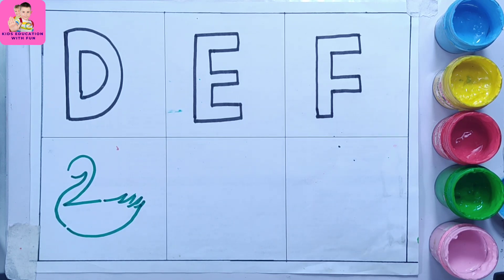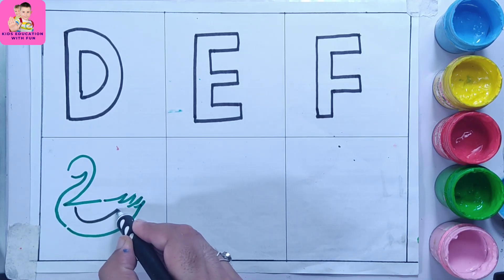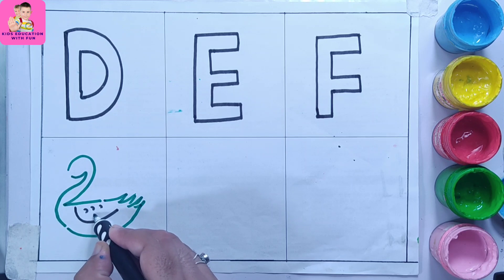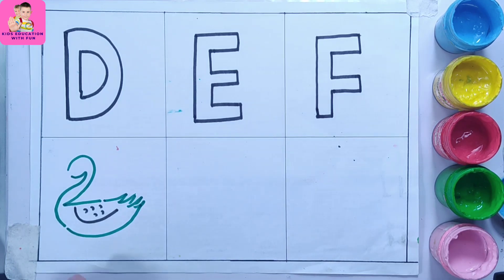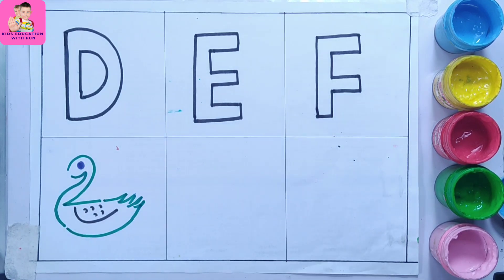Here you can draw a duck. Let me just change the color to let you know. So this is the portion a duck has wings. Now here I'm just making the eyes blue color eyes.